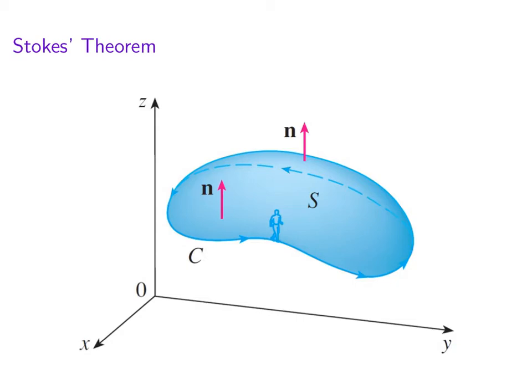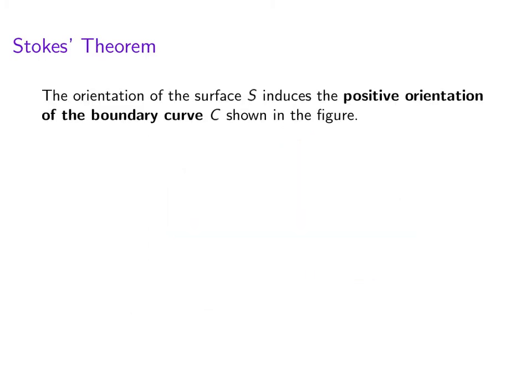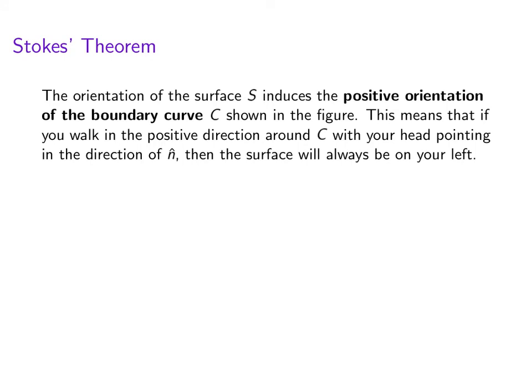Okay, now there's a little person walking around the surface. We're going to use that in the description in a moment of orientation. So the orientation of the surface induces what's known as the positive orientation of the boundary curve. That means if you're walking in the positive direction around C with your head pointing in the direction of n, then the surface is always going to be on your left.